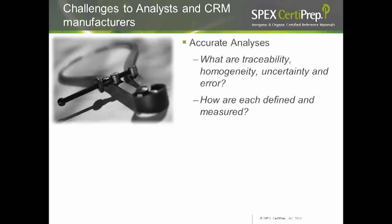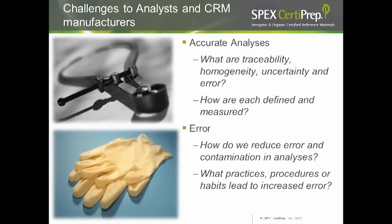There are more challenges that we both have in common as analysts and CRM manufacturers. We want accurate analysis. What are things like traceability and uncertainty and error, and how are these each defined and measured? The bane of every analyst's existence is error. How do we reduce error in our analysis, eliminate contamination issues, and identify practices or procedures that actually increase error in the lab?